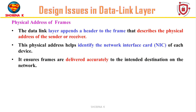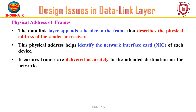And finally, the physical address of frames. The data link layer appends a header to the frame that describes the physical address of the sender or receiver. The physical address helps identify the network interface card of each device, ensuring that frames are delivered accurately to the intended destination on the network. And that's all for this session. Thank you so much.